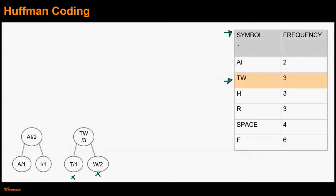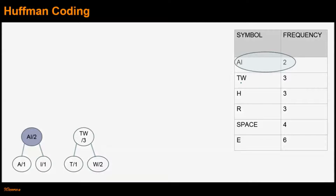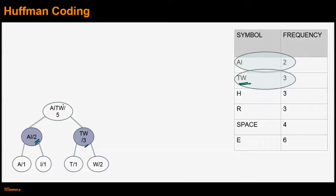In the next iteration, S1 is symbol AI and S2 is symbol TW — both nodes already exist. We combine AI and TW to create a new node AITW with frequency 2 plus 3 equals 5. We remove AI and TW from the frequency table and insert the newly created symbol AITW.